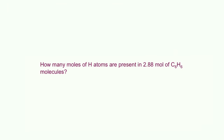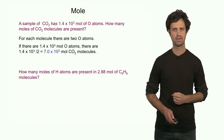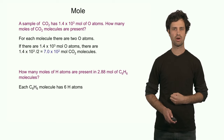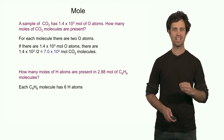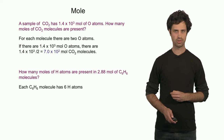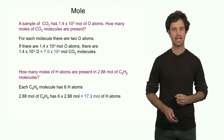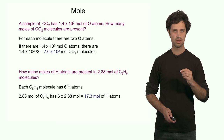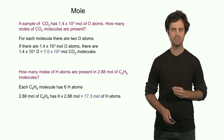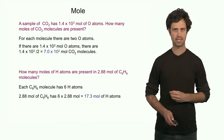In this last question, we are going to determine the number of hydrogen atoms in C6H6, given that I have 2.88 moles of molecules. Each molecule has a total of 6 hydrogen atoms. So if there are 2.88 moles of molecules, that means I have 6 times as many hydrogen atoms: 6 times 2.88 moles equals 17.3 moles of hydrogen atoms in this sample.